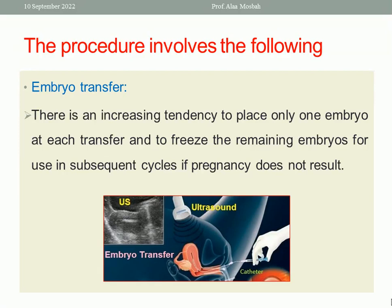There is an increasing tendency to place only one embryo at each transfer and freeze the remaining embryos for use in subsequent cycles if pregnancy does not result. Embryo transfer to the middle of the uterine cavity is performed using a catheter guided by ultrasound, as shown in this picture. I have a previous lecture about embryo transfer and the guidelines on my YouTube channel.